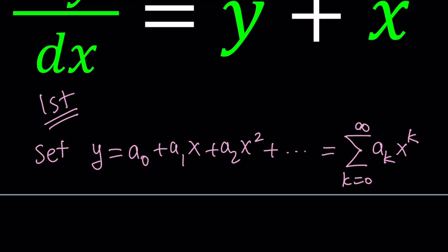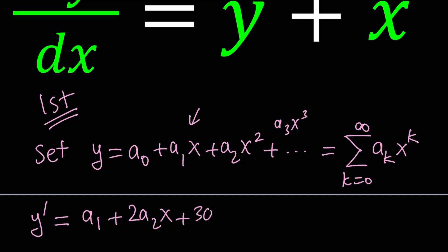Now we differentiate this. There are a couple of different ways to do it. You can differentiate in polynomial form: the derivative of a sub 0 is 0 because it's a constant; the derivative of a sub 1 x is just a sub 1; the derivative of a sub 2 x squared is 2 a sub 2 x; and the derivative of a sub 3 x cubed is 3 a sub 3 x squared, and so on.